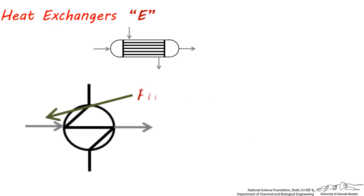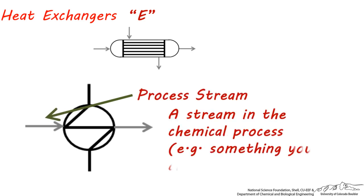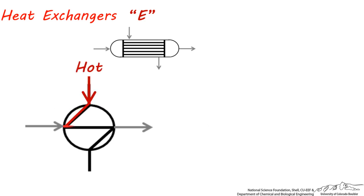The gray lines represent the process stream, which is whatever you're making or in the process of making. This stream is important because it's something you'll probably be reacting, separating, and eventually selling. This configuration represents a liquid or gas utility stream going through a tube or series of tubes, which heats up a liquid or gas process stream. In this configuration, the liquid or gas phase utility stream is cooling down a liquid or gas phase process stream.